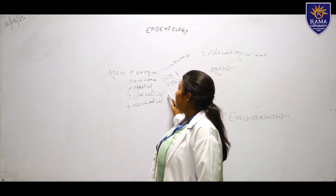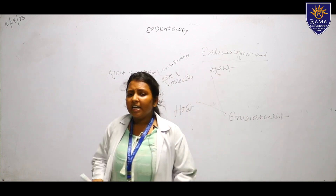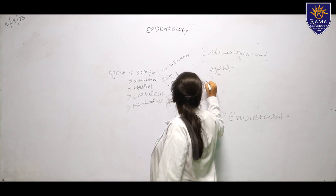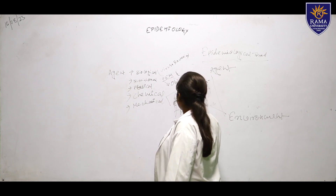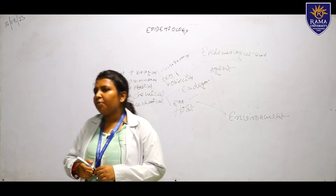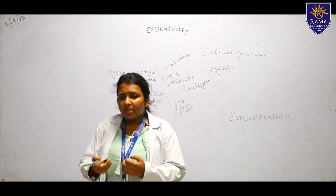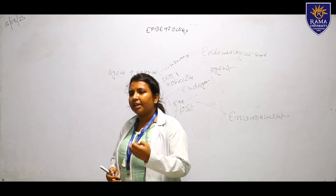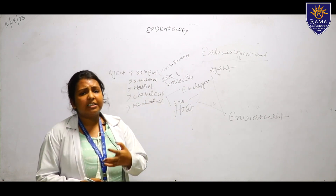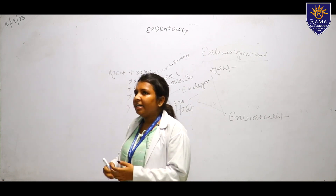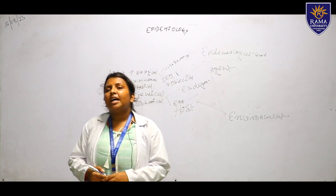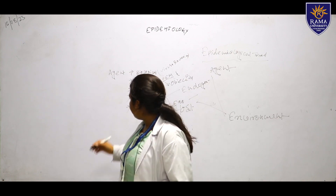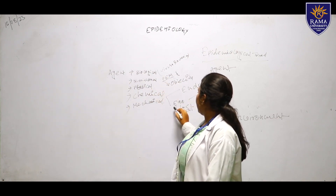The chemical agent has two factors: endogenous and exogenous. Endogenous chemicals come from inside the body — like ketone and urea. Any deficiency or overgrowth of these body-produced chemicals causing a problem comes under chemical agent. Exogenous refers to outside sources like any gas or pollution.